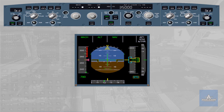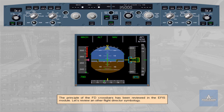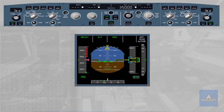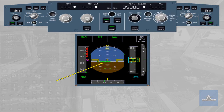Let's review another flight director symbology. We have seen the flight director crossbar symbology referring to the aircraft attitude symbol. The other flight director symbology refers to the flight path vector (FPV), or BIRD. The BIRD can be displayed or turned off from the PFD by pressing the Heading/Vertical Speed – Track/Flight Path Angle push button on the FCU. Notice that on the FCU, the indications have been modified to reflect the change to track and flight path angle.